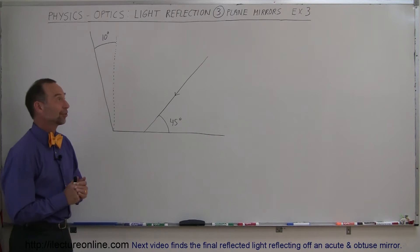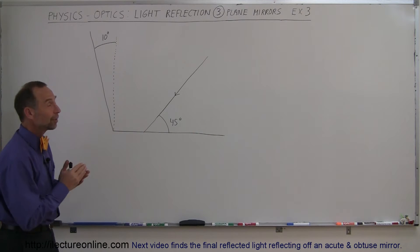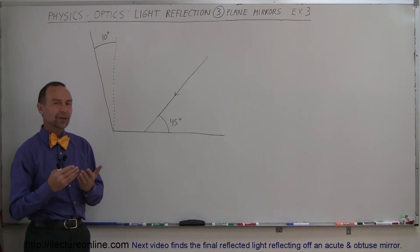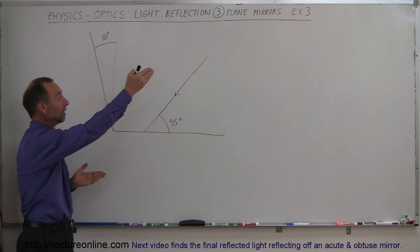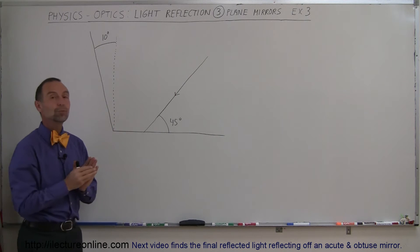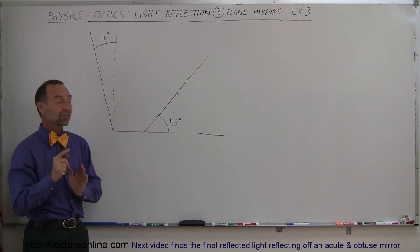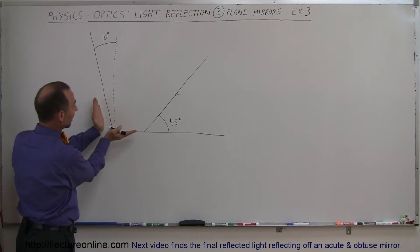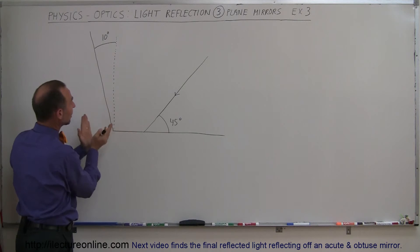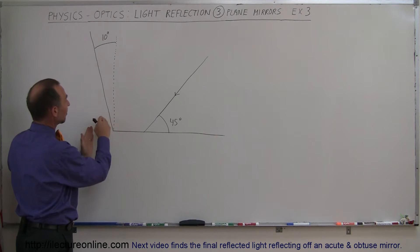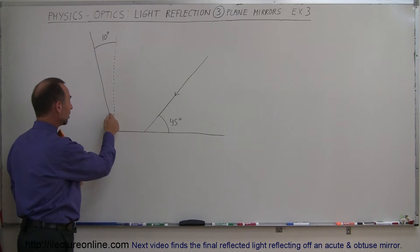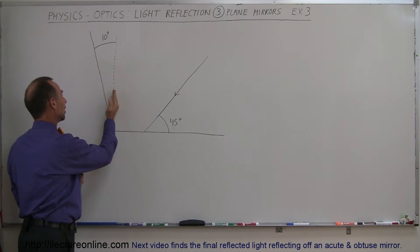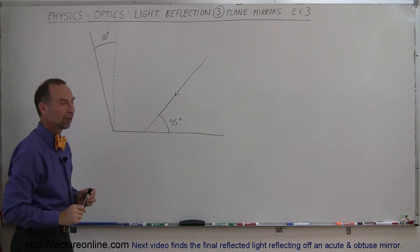Welcome to Electron Online. Here's our third example of how to figure out what the exiting beam direction will be when we have an incident beam of light upon two plane mirrors. In this case, the two plane mirrors do not make an angle of 90 degrees — it's actually an angle of 100 degrees: 90 plus an additional 10, because this mirror is tilted 10 degrees to the left.